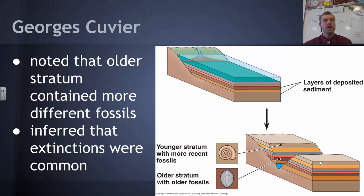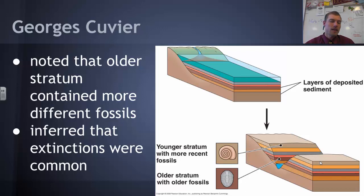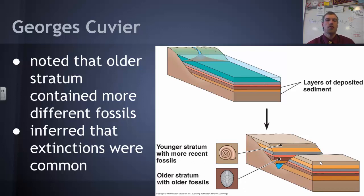What Cuvier noted was that as you went into older rocks, you got more fossils that were different from what you might see today. When you got younger rocks, you got fossils more similar to what you see today. He inferred that over time there have been a fair number of extinctions that wiped out different species — giving us the idea that change is occurring over time.